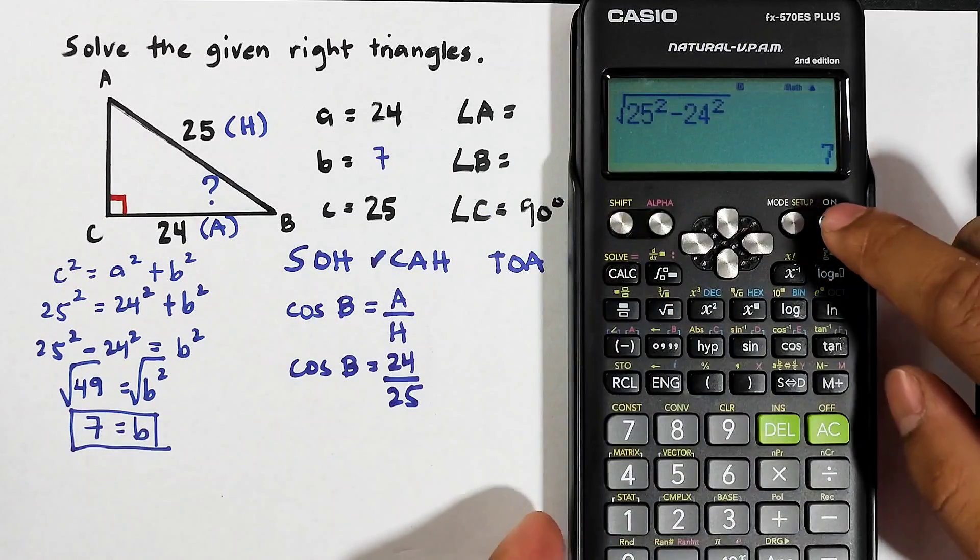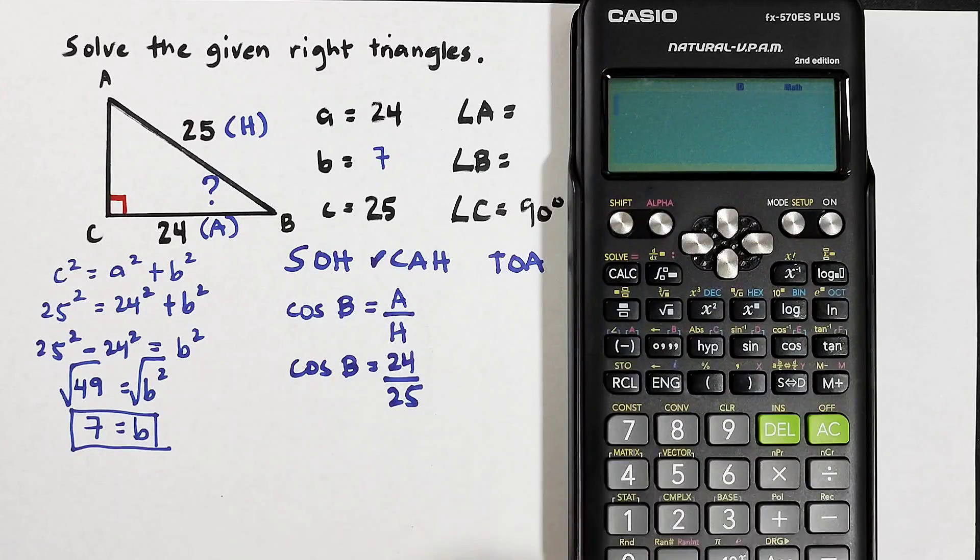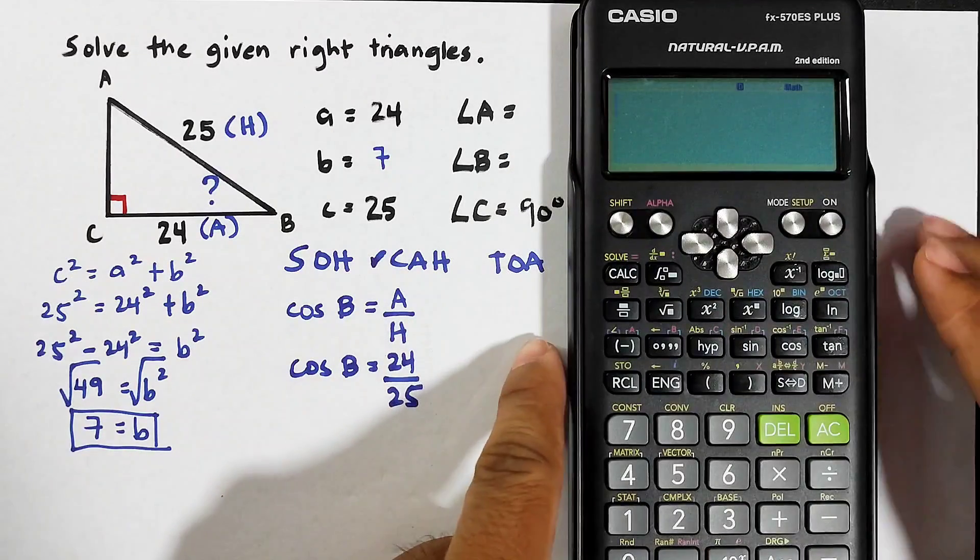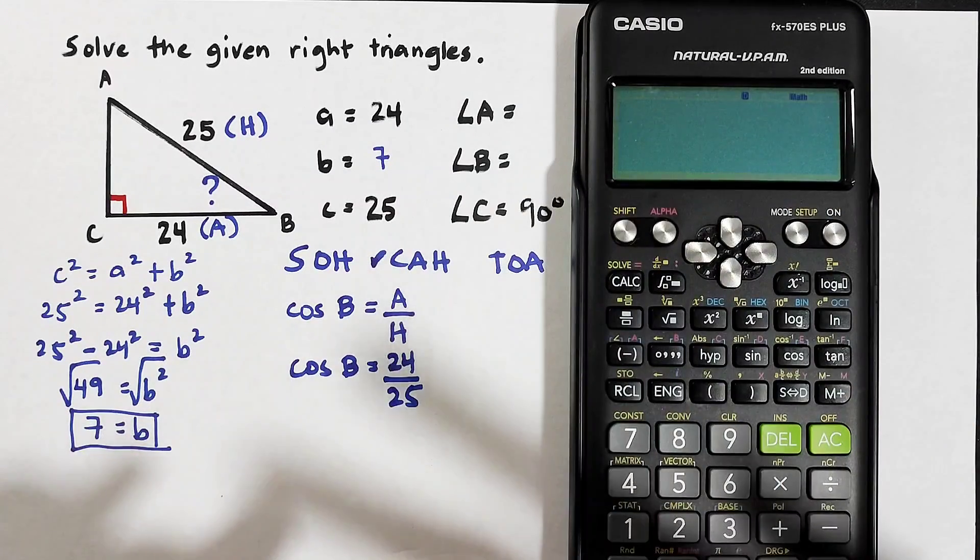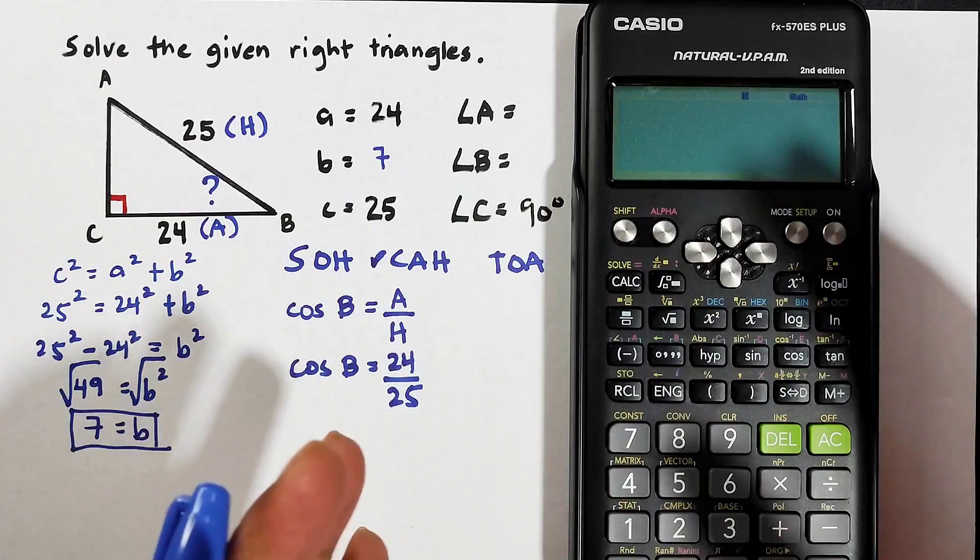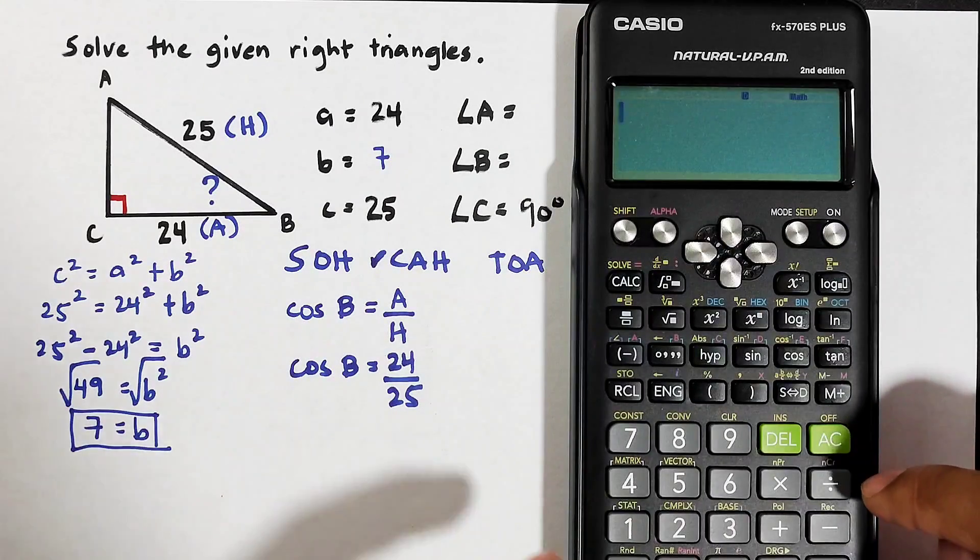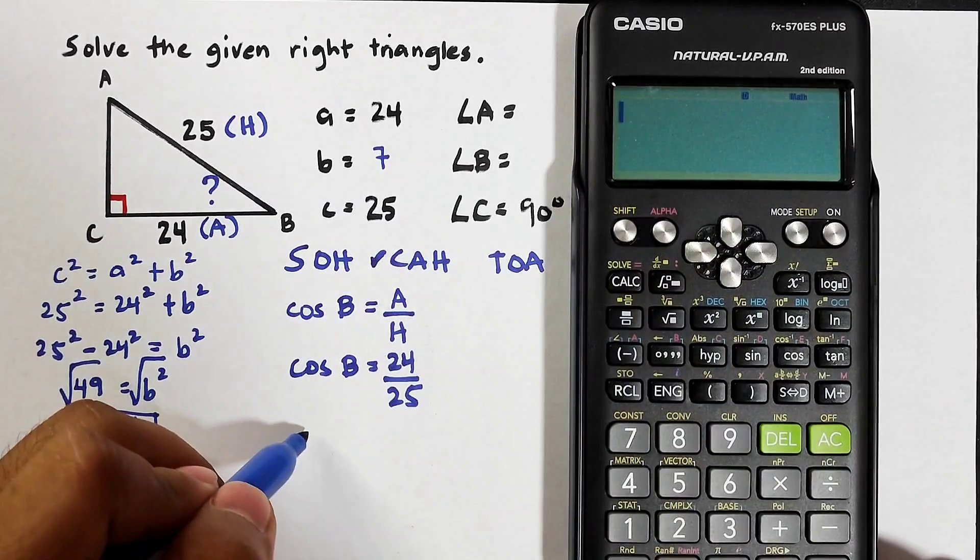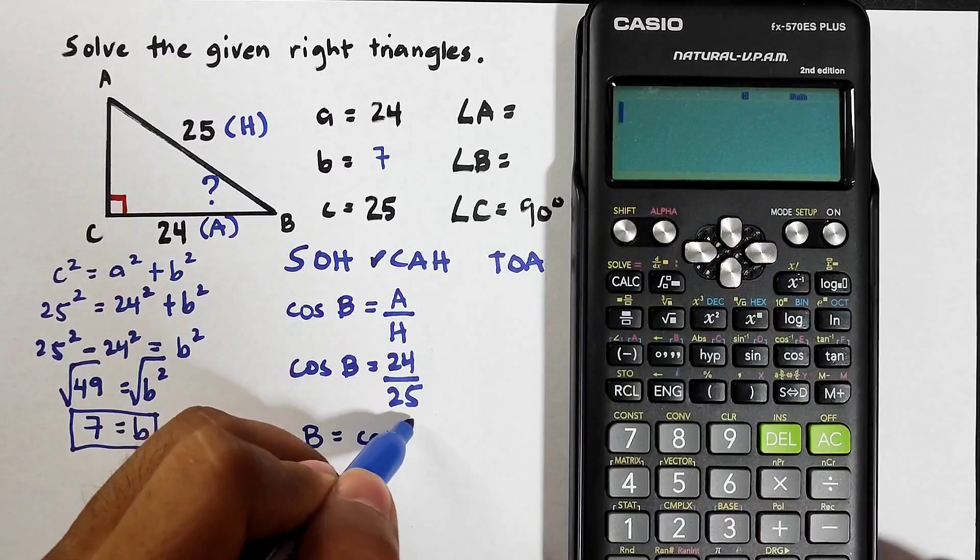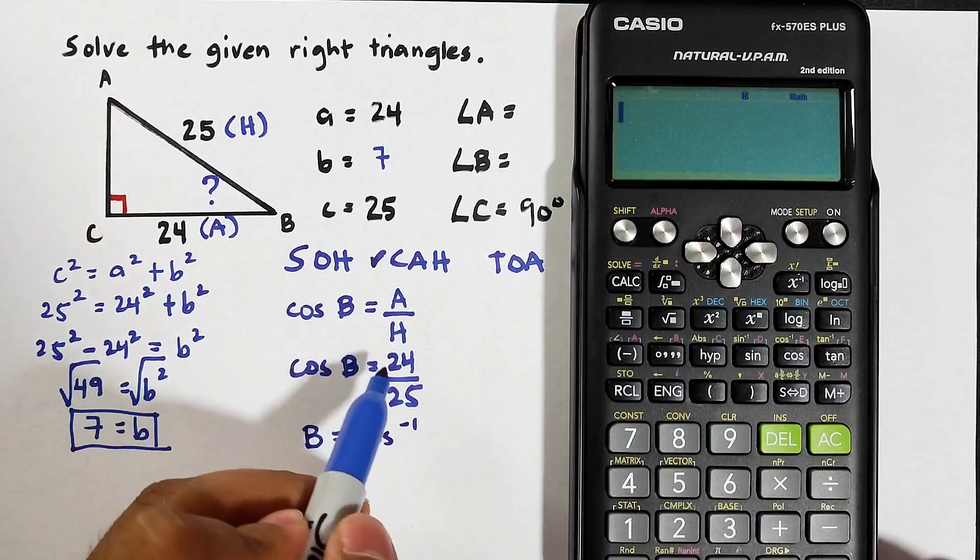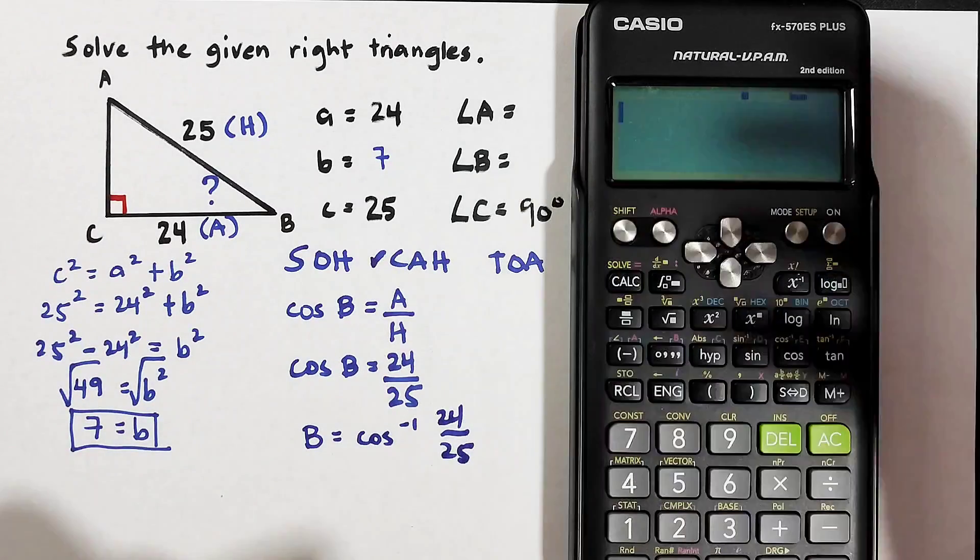Now for this, if you have your calculator again, calculator is very important for this kind of calculation. Because if you don't have your scientific calculator, you will do this manually. For this case, to solve for B what you need to do is B is equal to cosine raised to negative 1 and then input the 24 over 25.